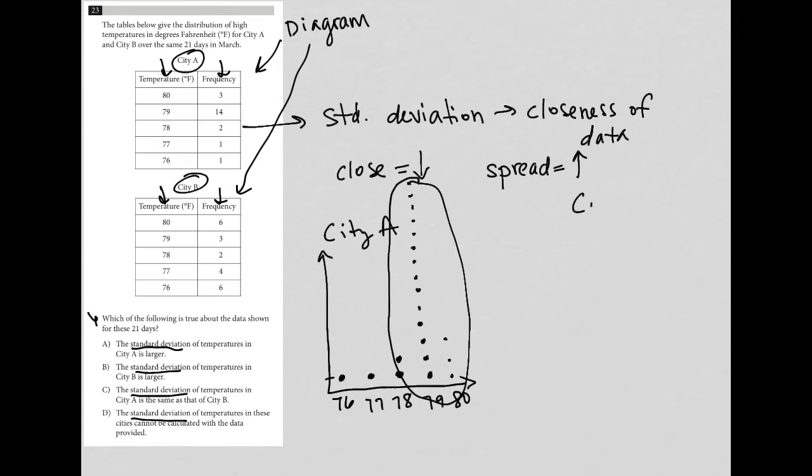When I look at this same exact plot for city B so same temperature 76 77 78 79 and 80 for 76 degrees Fahrenheit for city B I have six one two three four five six for 77 I have four one two three four for 78 I have two one two for 79 I have three one two three and for